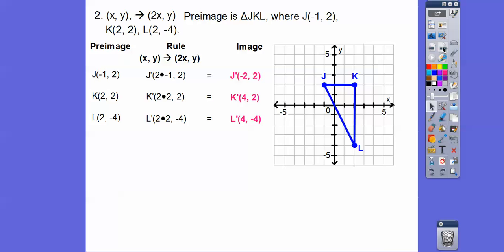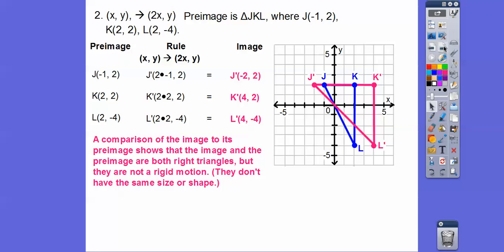When we graph those, J prime is at (−2, 2), K prime is at (4, 2), and L prime is at (4, −4). Do you think it stayed rigid? No. A comparison shows the image and pre-image are both right triangles, but they are not rigid motion because the pink triangle is a lot bigger than the blue one.